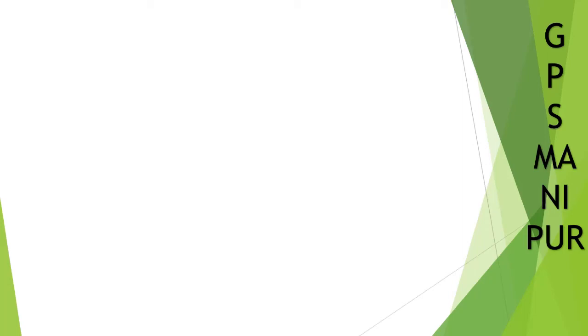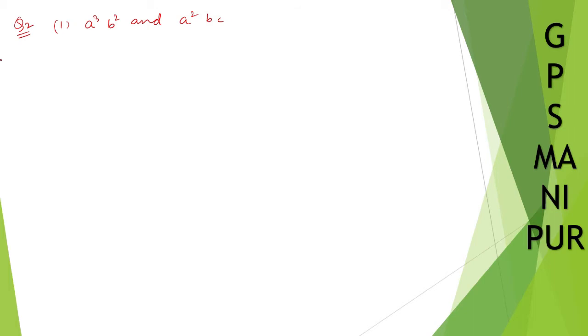Now we are doing exercise 2.4, question number two. Find the LCM of the following polynomials. Roman number one: we have a cube b square and a square b c. Solution.